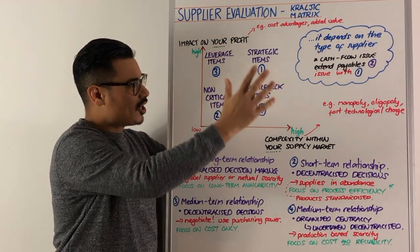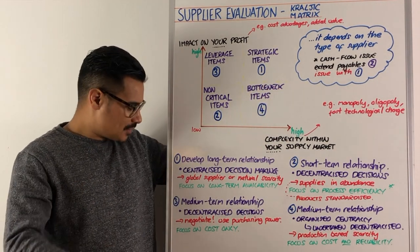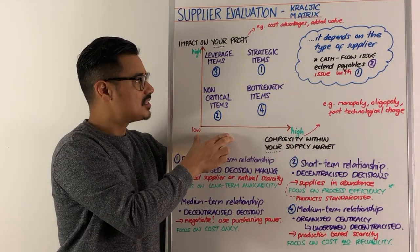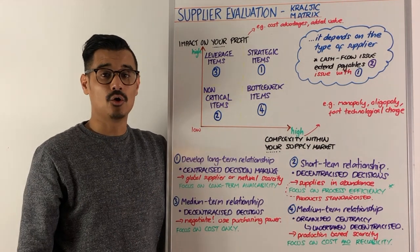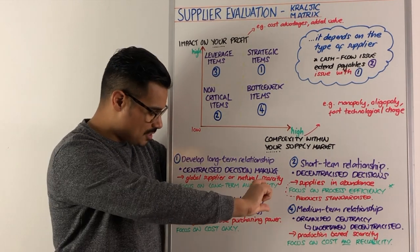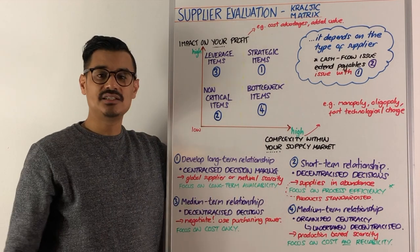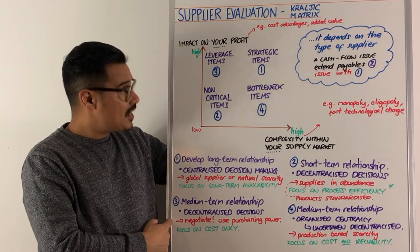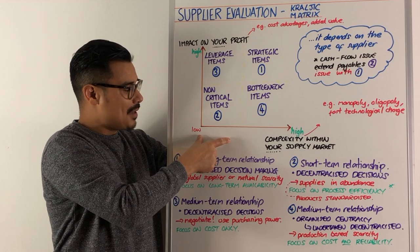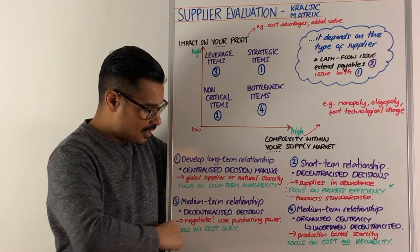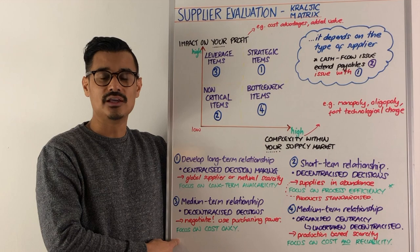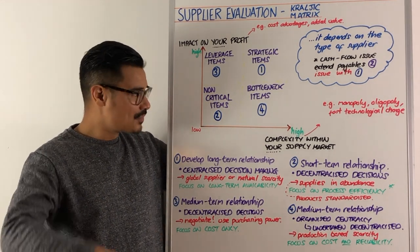The more complex ones are leverage items (three) and bottleneck items (four), as they sit somewhere in the middle. Leverage items have low perceived complexity in the market but a high impact on your profit — they could give you cost advantages or added value. You want a medium-term relationship and may still decentralise decisions. Crucially, because there's little complexity in the supplier's market, you have room to buy big and negotiate — use your purchasing power. Focus on cost only, potentially including purchasing economies of scale.